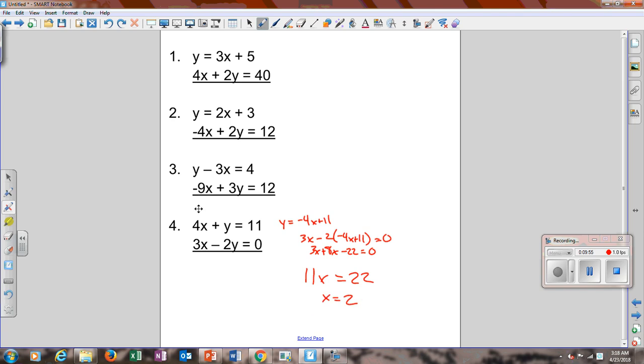Take that x. Plug it in up here. You can either plug it in here, or you can plug it into this equation. I'll choose the second one because it's easier. Y is by itself already. So that's going to give you y equals negative 8 plus 11, which is 3. So your answer would be 2 comma 3.